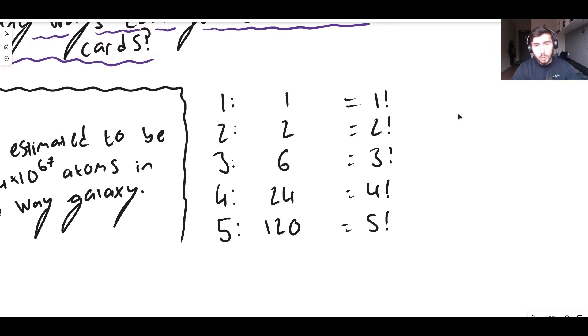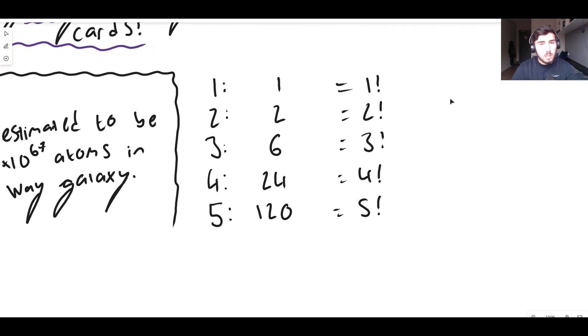Now we're not going to rigorously show why this is the case. It's not too difficult to know why. But if you're not familiar with this notation, this is simply equal to each number. So 3 factorial for example is 3 times 2 times 1. 2 factorial is 2 times 1. 4 factorial is 4 times 3 times 2 times 1. 5 factorial is 5 times 4 times 3 times 2 times 1.